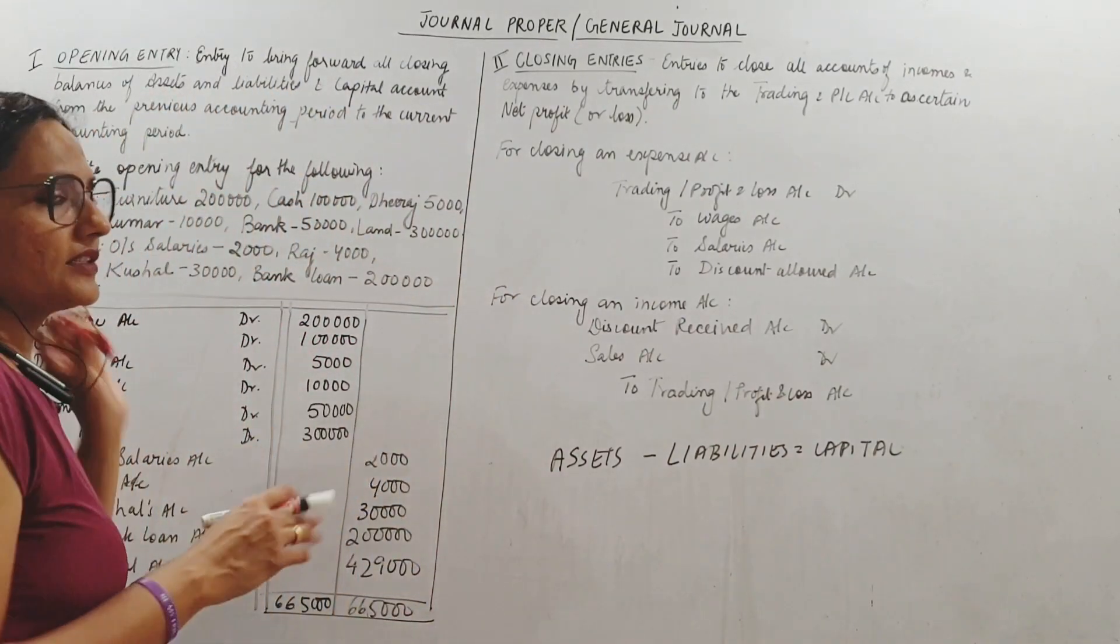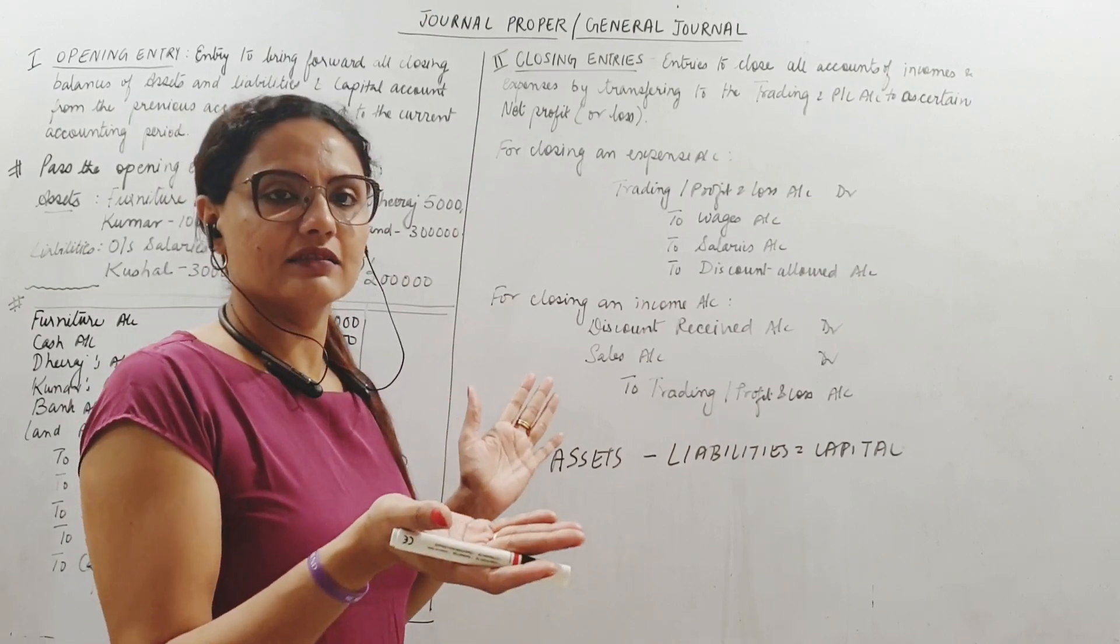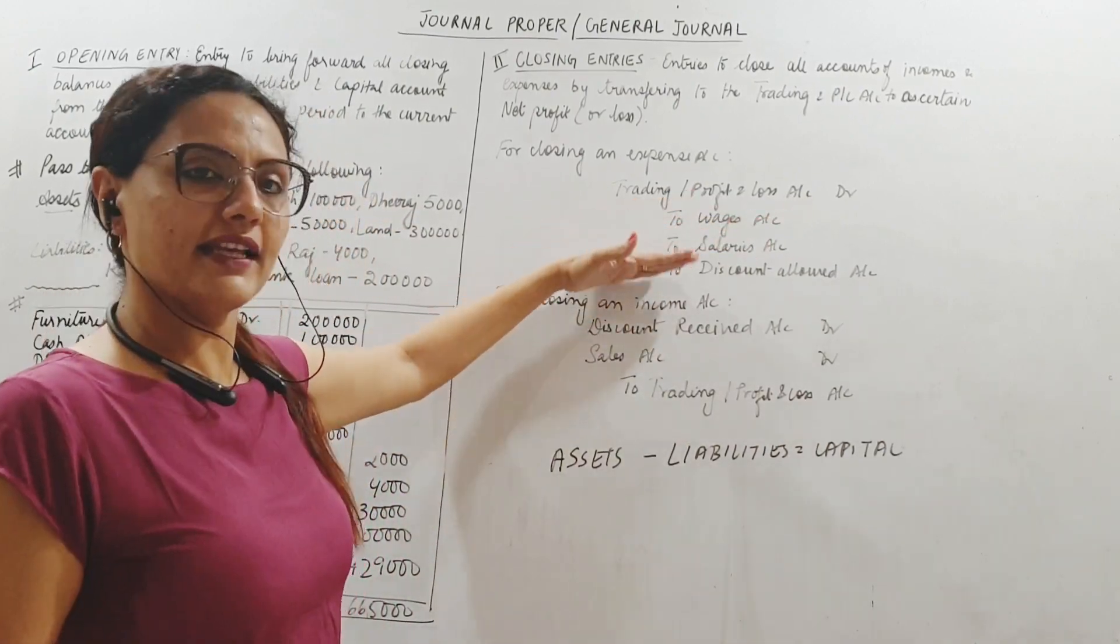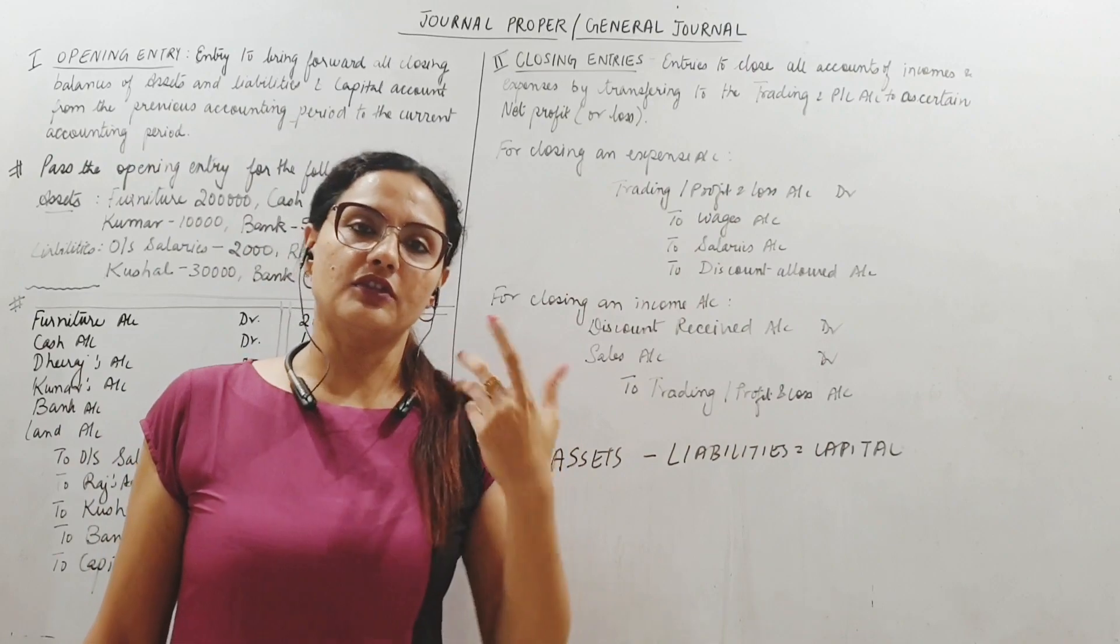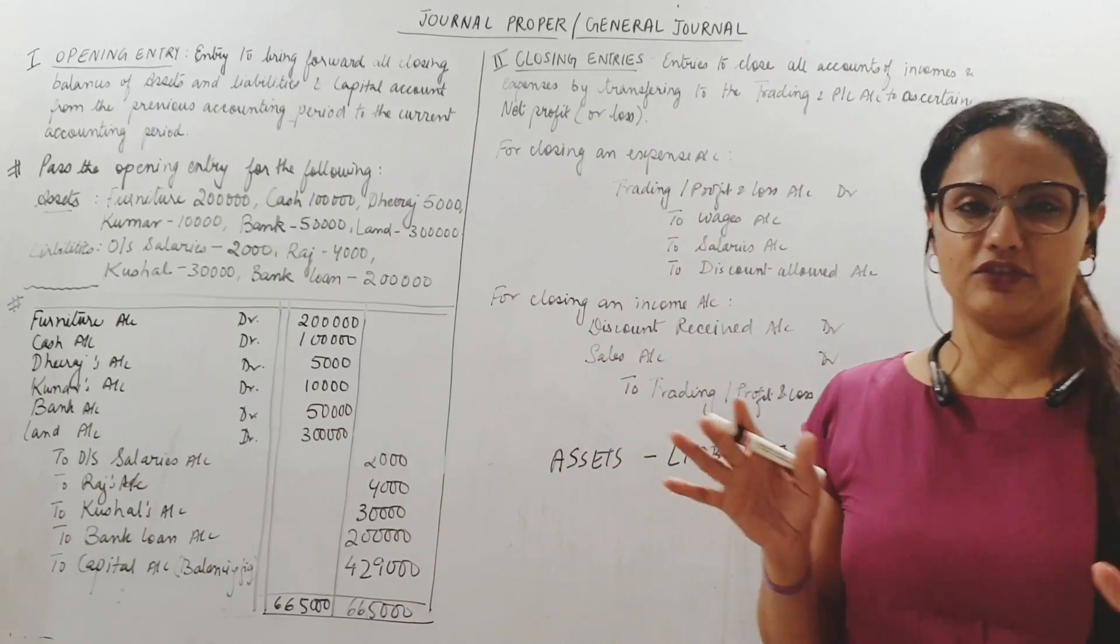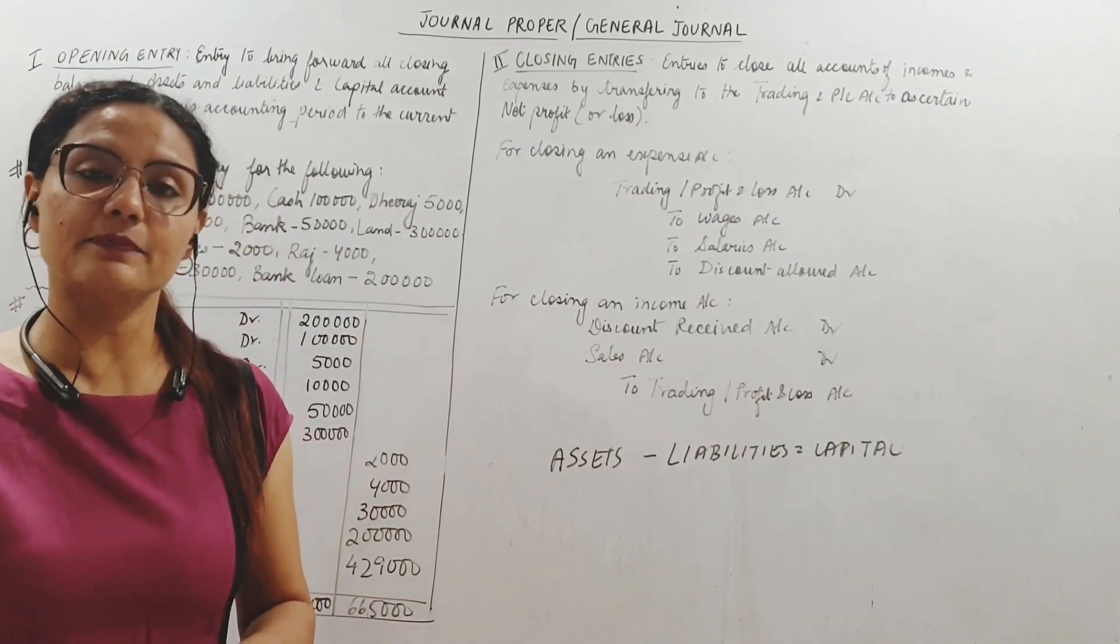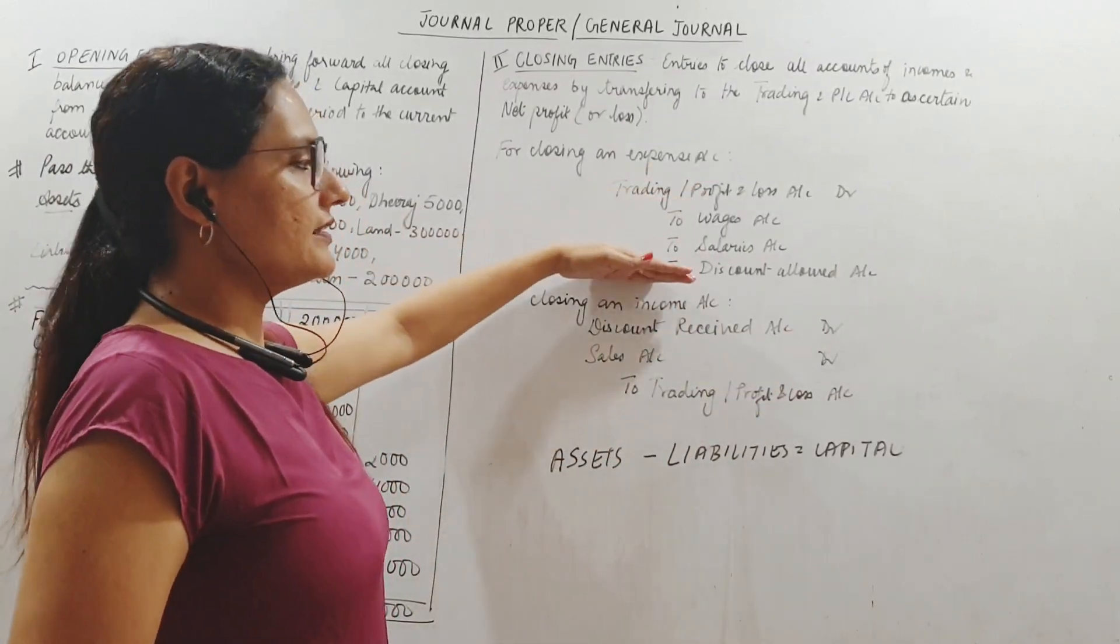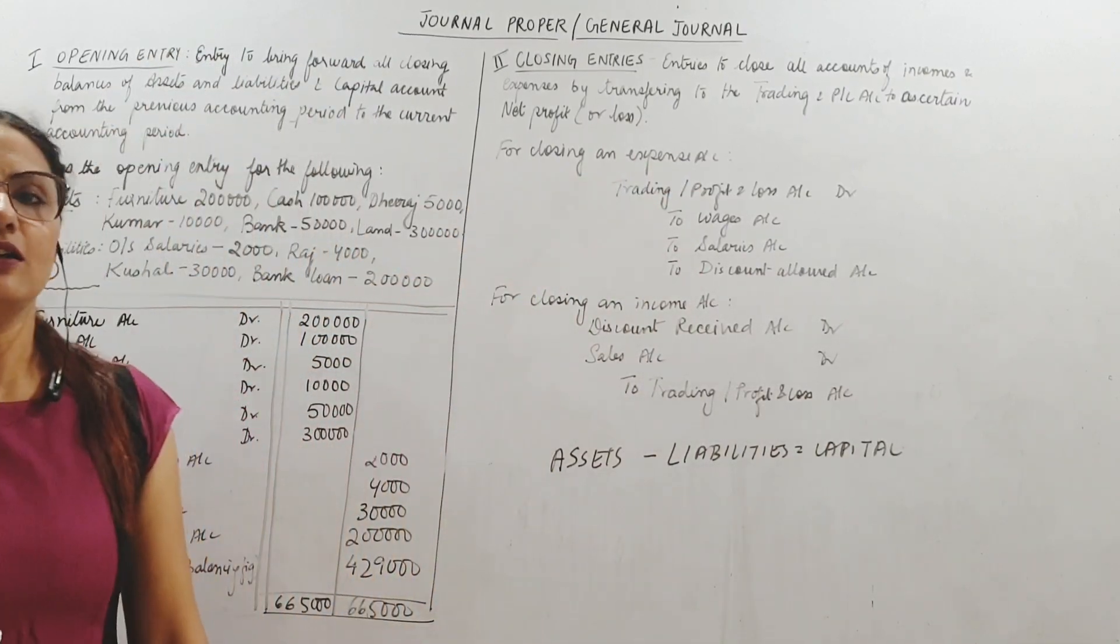Here for closing an expense, all expenses are debit. Now if I have to finish off a debit balance, what do I have to do? Credit. Debit credit equal to close it. So here we have to credit all expenses to close it and transfer to the debit of trading or P&L account. Trading account or profit and loss account - right now we are not going to the divisions. We will come to it later when we do final accounts. Right now you just need to know that all expenses will be credited to close and will be debited to the trading and profit and loss account.